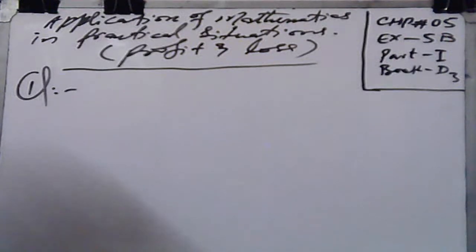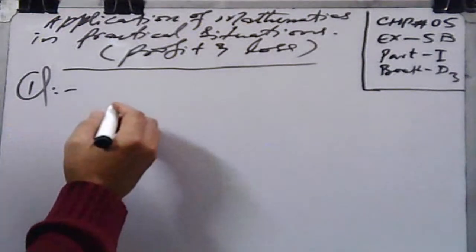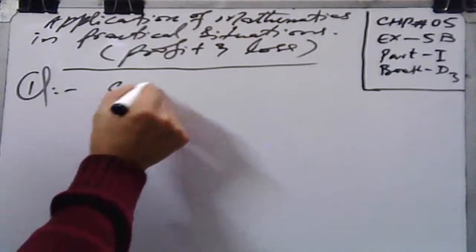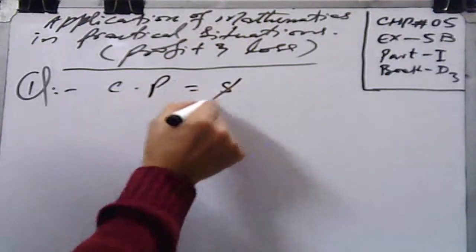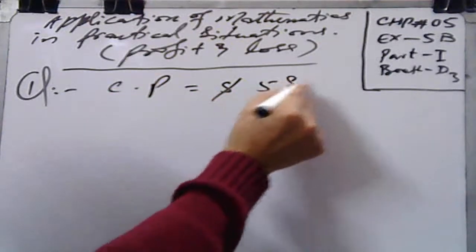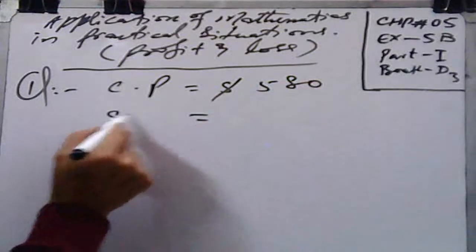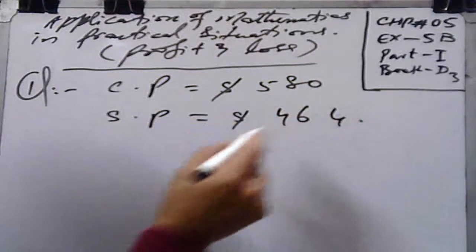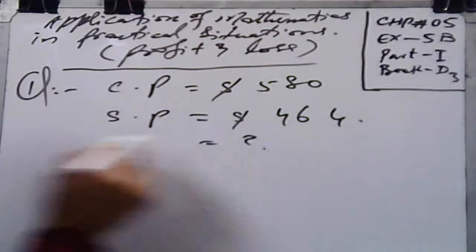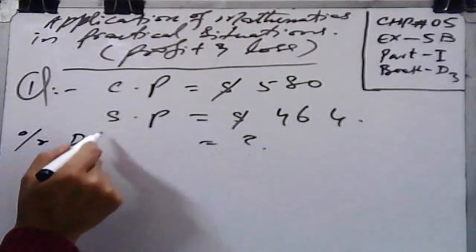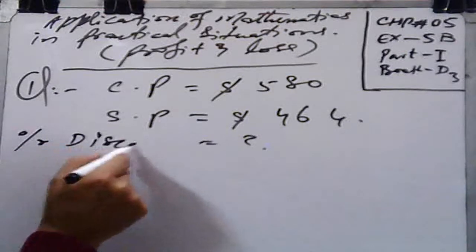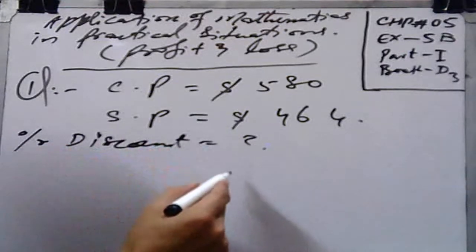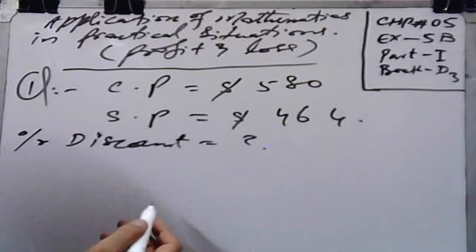Question number one: a necklace priced at $580 is sold for $464. Find the percentage discount. So we have the cost price of $580 and the sale price of $464, and we need to find the percentage discount.